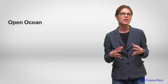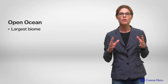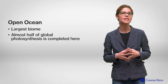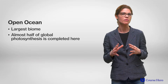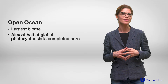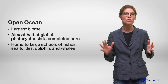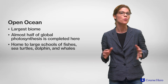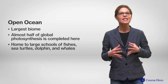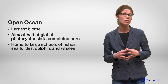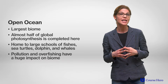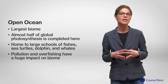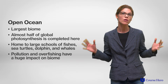The largest of all biomes are the open oceans that cover most of Earth's surface. Close to half of all global photosynthesis is completed by huge masses of plankton floating in the ocean. The open ocean is also home to large schools of fish, sea turtles, dolphins and whales. Sadly, despite the vast size of this biome, pollution and overfishing has had a major impact on fish populations, depleting fish stocks in all Earth's oceans.